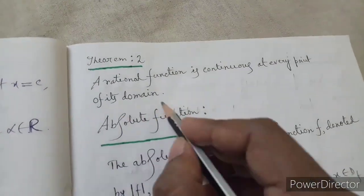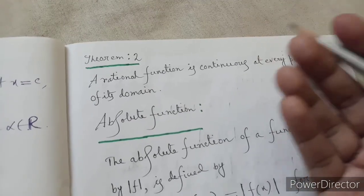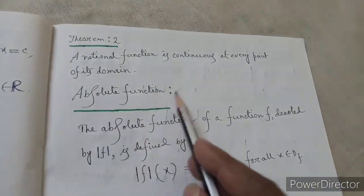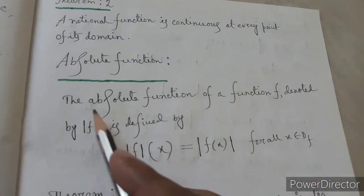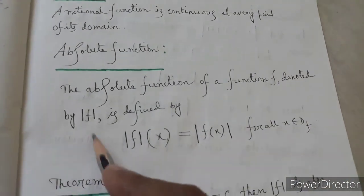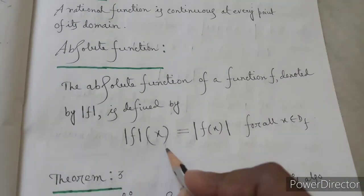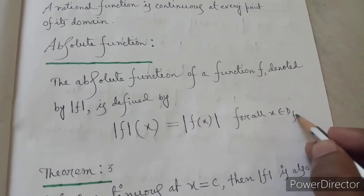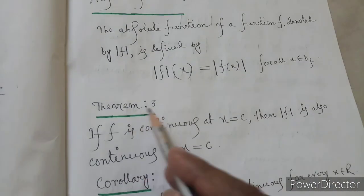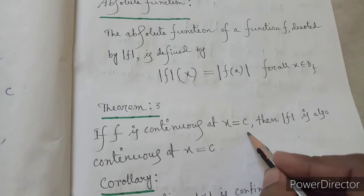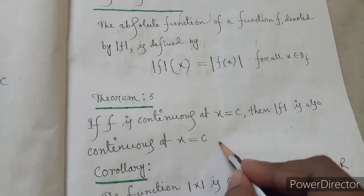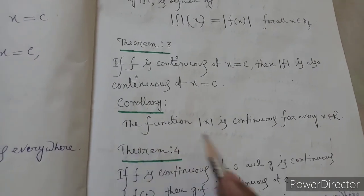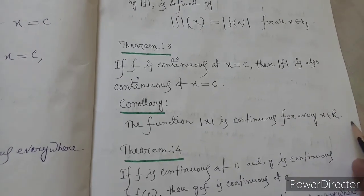Theorem two: a rational function is continuous at every point of its domain. For example, (x squared plus 2x plus 3) divided by (x minus 1) is a continuous function. Regarding the absolute value function: mod f of x equals mod of f(x) for all x in the domain of f. Theorem three: if f is continuous at x equal to c, then mod f is also continuous at x equal to c. Corollary: the function mod x is continuous for all x in R.